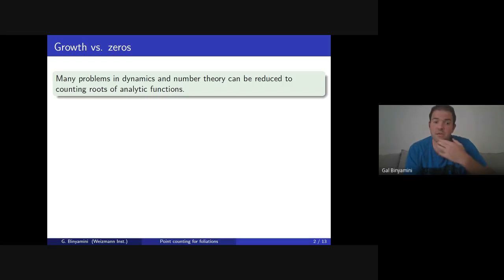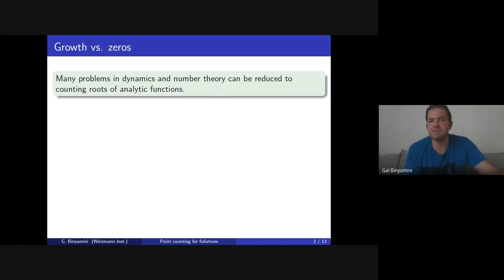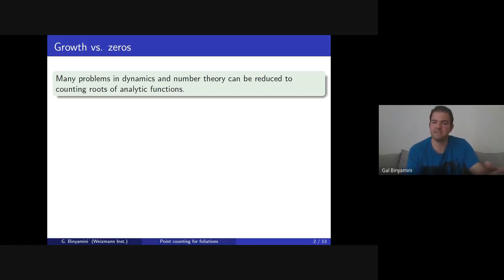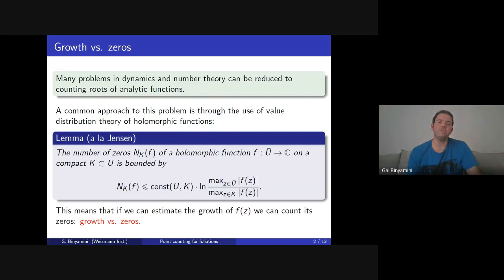The general idea I want to convey is that there are many problems in dynamics, number theory, and other areas that can be reduced to counting roots of analytic functions. There are various ways of trying to get bounds for the number of zeros—some topological, like intersection theory leading to the Bézout theorem; some real geometric, like Khovanskii's theory of fewnomials; and also complex analytic methods. The method I'll focus on is counting zeros of meromorphic functions by looking at their growth.